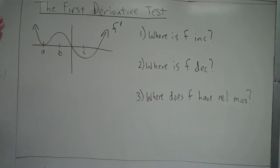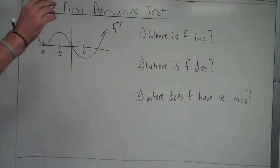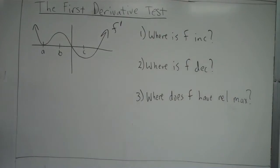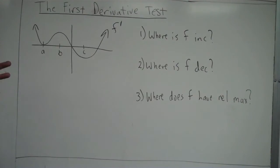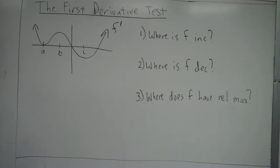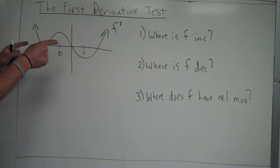Number one says: where is f increasing? We should identify the x-intervals where f is increasing. We talked about in previous examples that f is increasing when f prime is greater than zero — when f prime is positive. That's key. So what we're looking for here on our graph is where is f prime greater than zero.